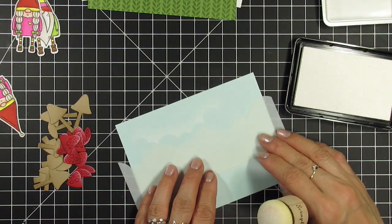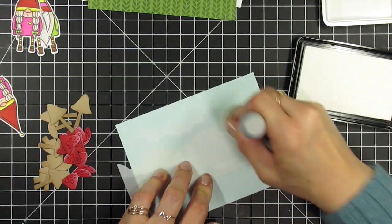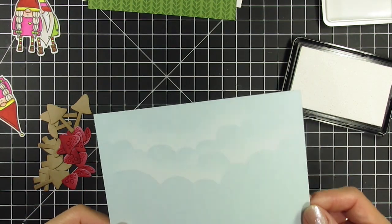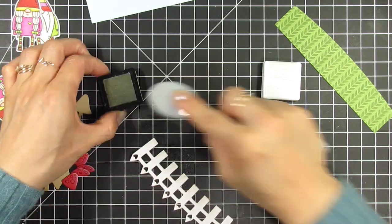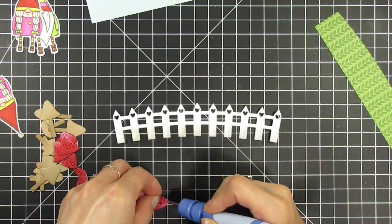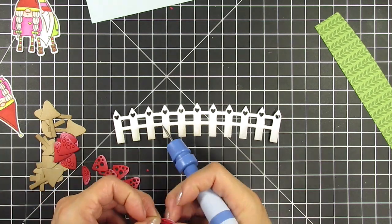Next, I use the Set the Scene Cloud stencils and sugar cube ink to blend clouds on the saltwater taffy panel. It gives such a cool effect to a light and subtle background. Then I ink up the bottom of the fence posts with sea salt ink to give it some dimension and make it look a little weathered.